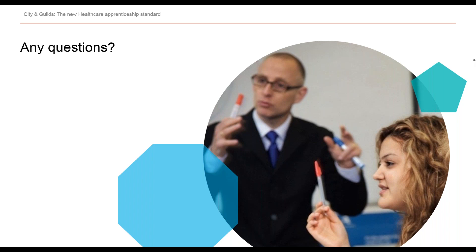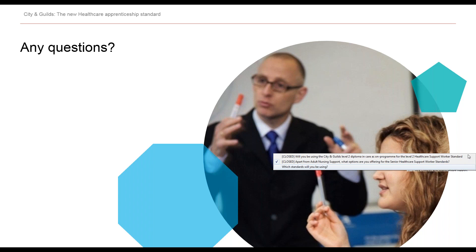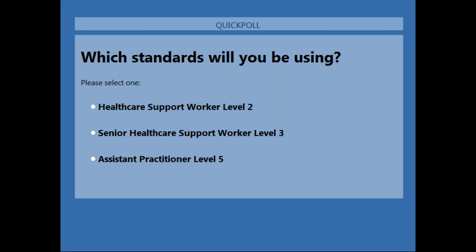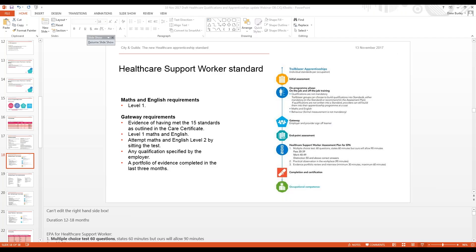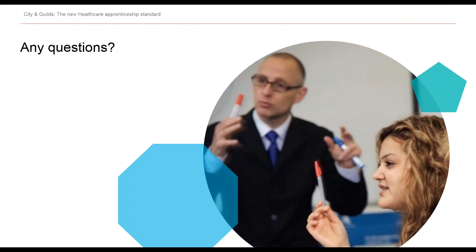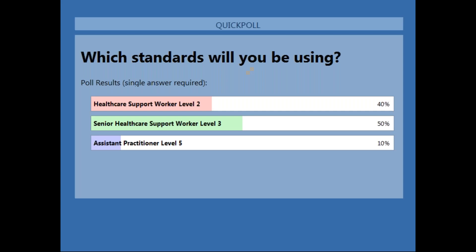We have one quick poll question: which standards will you be using? The answer options are healthcare support worker Level 2, senior healthcare support worker Level 3, or assistant practitioner Level 5. The results of the poll are in — 50% of you said you'll be offering the senior healthcare support worker Level 3, which I'm sure will be very interesting to note.